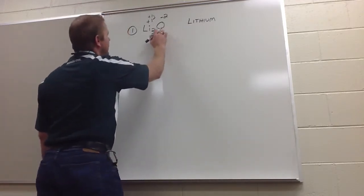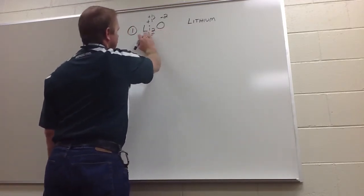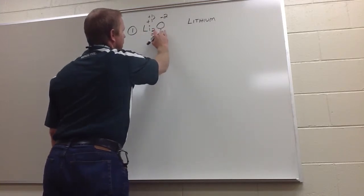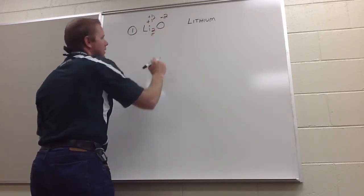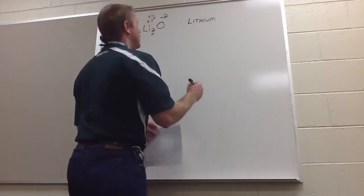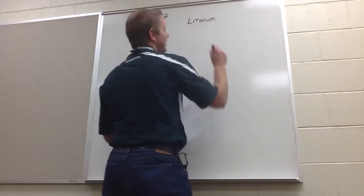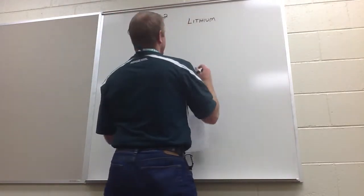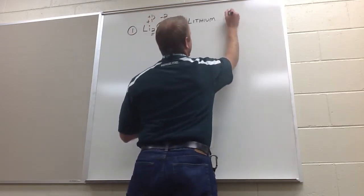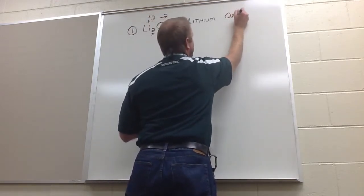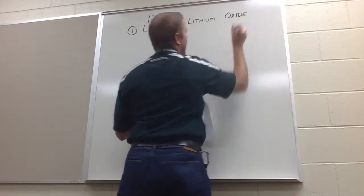Then you end up looking at the second part. You've done the lithium, and you end up looking at the O. Well, that is oxygen, but when it's monatomic, we give it the ending of -ide. So instead of oxygen, it becomes lithium oxide.